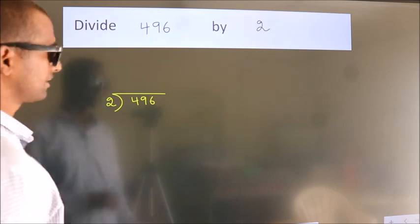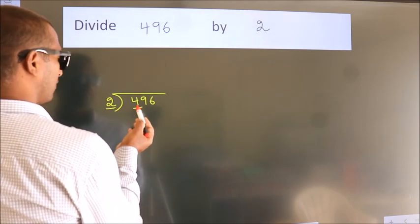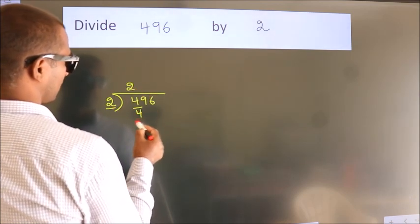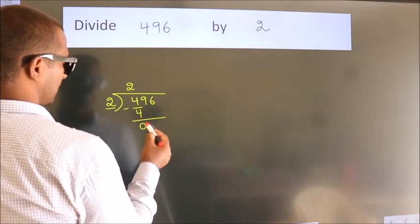Next, here we have 4, here 2. When do we get 4? In 2 table, 2 times 2 is 4. Now we should subtract. We get 0.